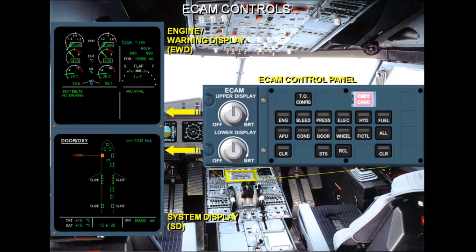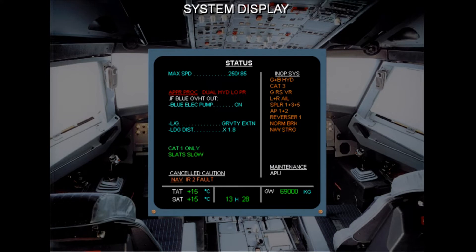Below the ECAM displays on the center pedestal is the ECAM control panel. The two control knobs on the left-hand side are used to adjust the brightness of the two ECAM screens and to turn them off. The push buttons on the right-hand side are mainly used to display any of the system pages or the status page, and to clear or recall a warning or caution message.